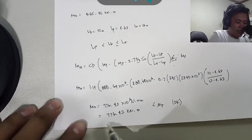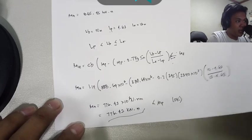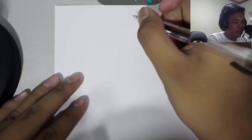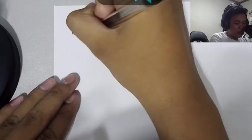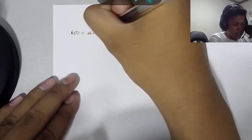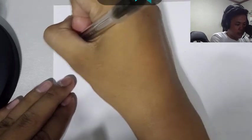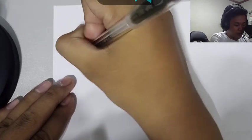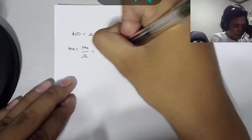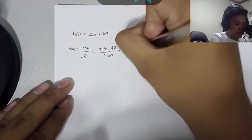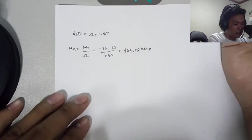Now we'll solve the ultimate capacity using the factor of safety by LRFD and ASD. First is for ASD. We have a factor of safety here of 1.67. MA equals MN over factor of safety. By direct substitution, it equals 464.92 kilonewton-meter.